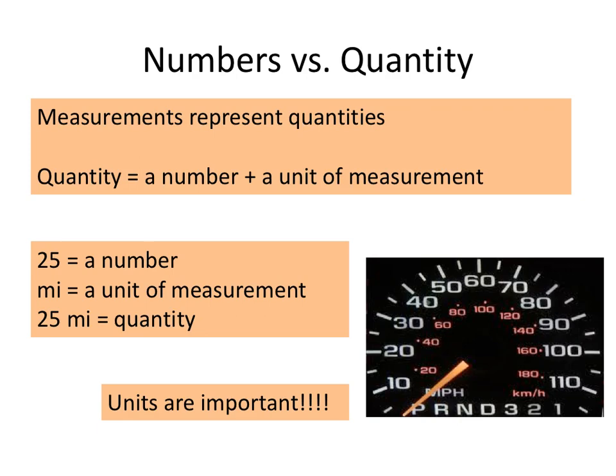Let's start by differentiating between numbers and quantities. The measurements that you've taken in your previous labs represent quantities, and quantities consist of a number and a specific unit of measurement. So something like the number 25 — that's a value, that's a number. Miles is a unit of measurement. Put those together: 25 miles — that is a quantity.